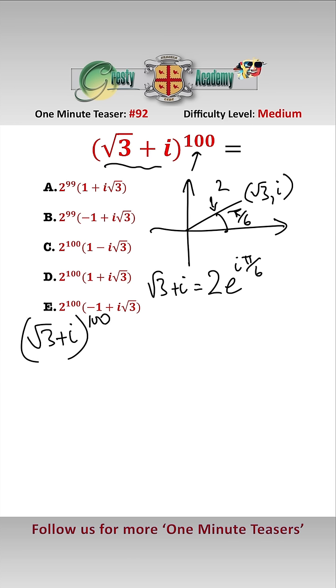So (√3 + i)^100 is equal to 2^100 e^(i·100π/6). Now we can take out multiples of e^(2πi) because all that does is get us back where we started, so therefore that equals 2^100 e^(i·4π/6).